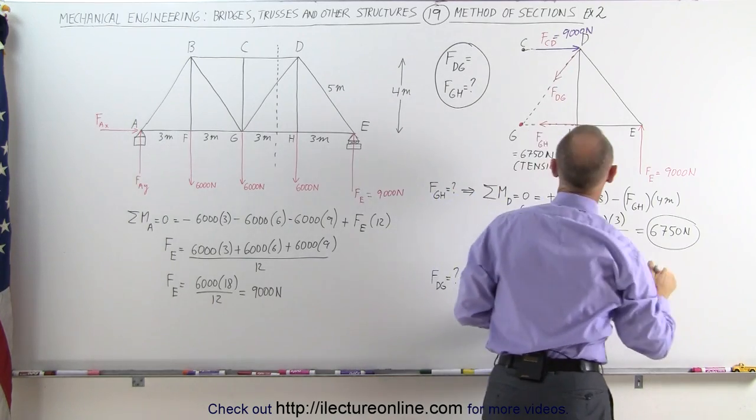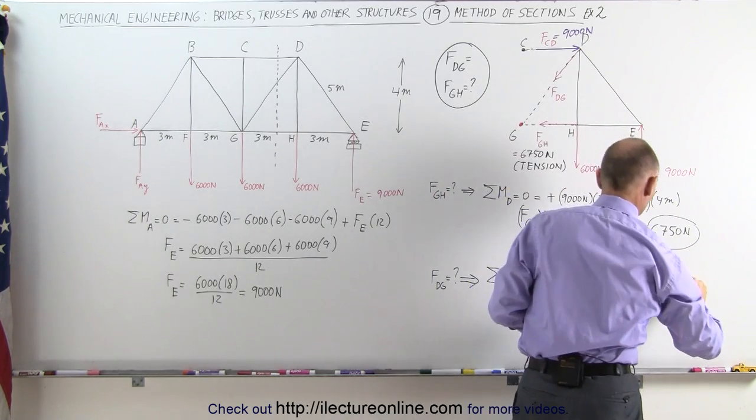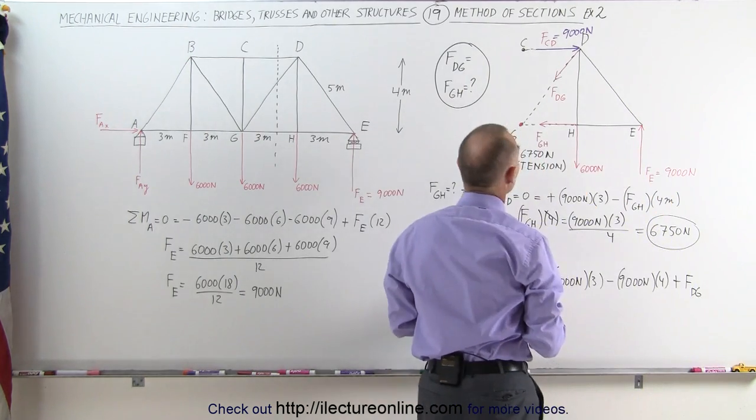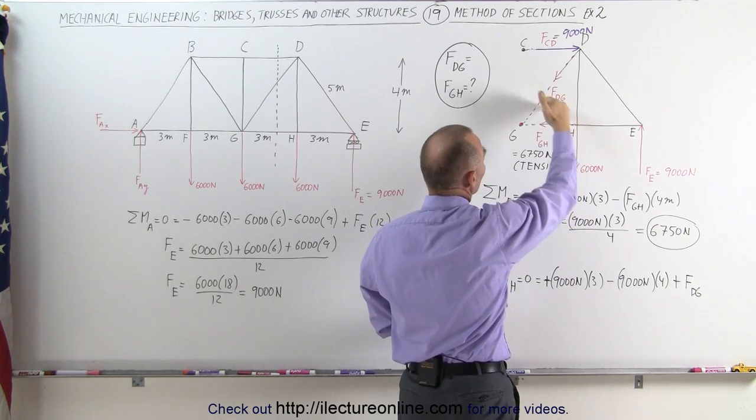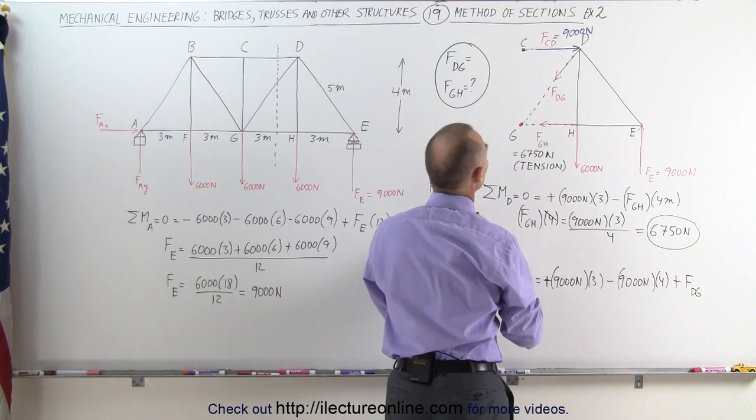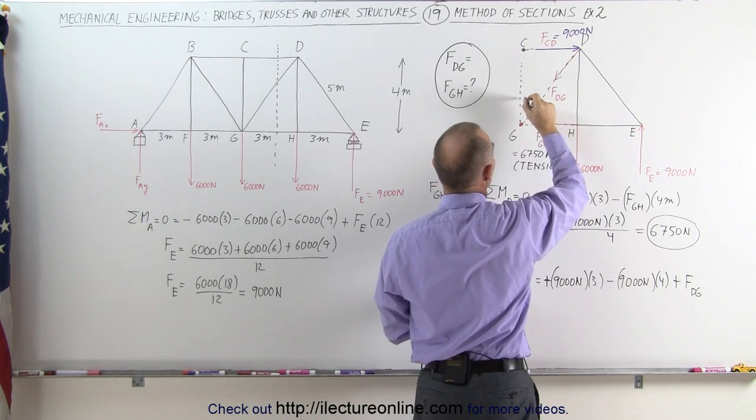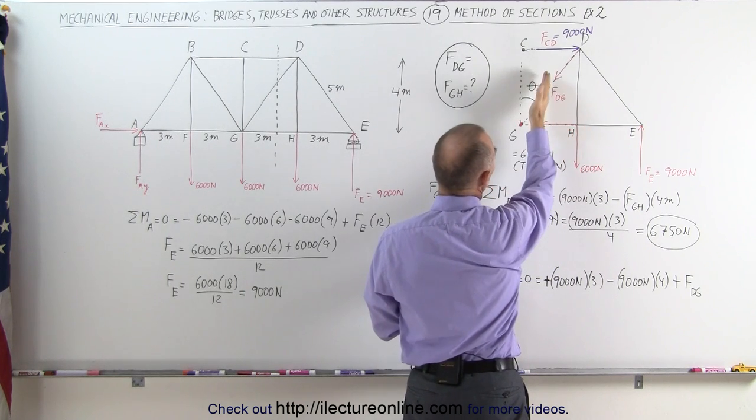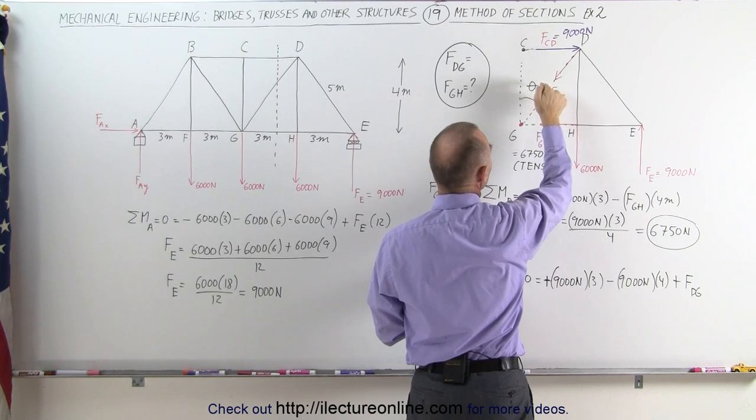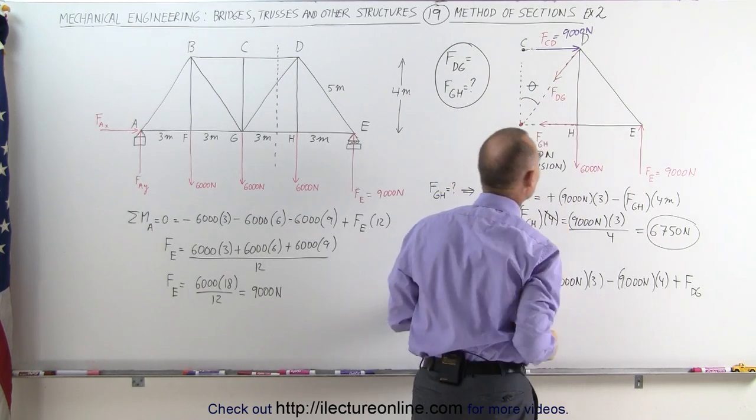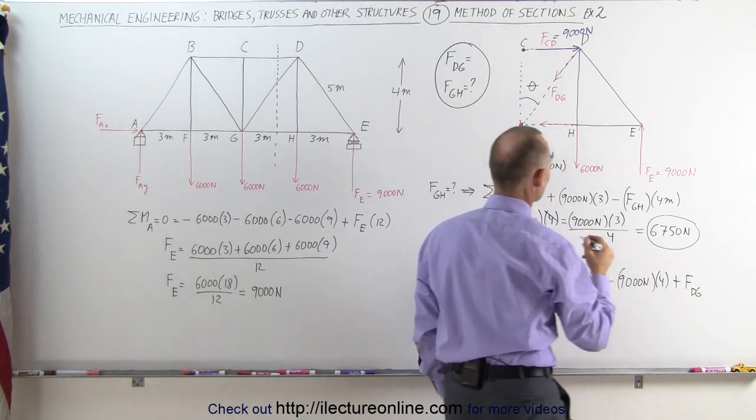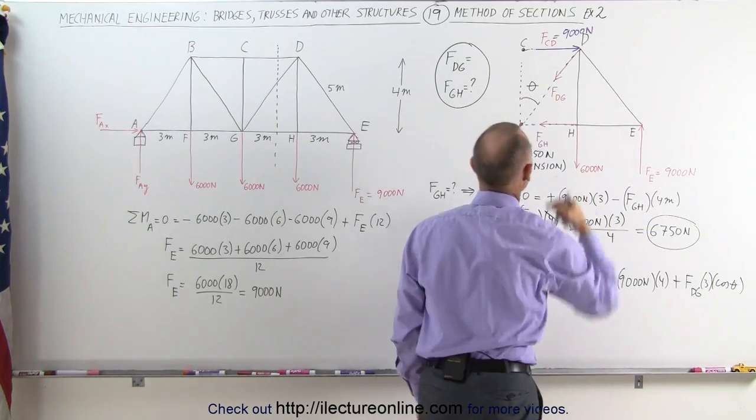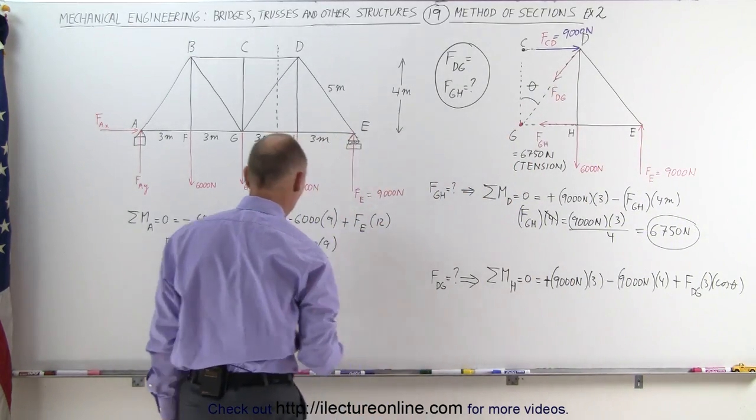Now we have one more right here, which would give us a counterclockwise direction force or moment I should say. That's plus FDG now. What is the distance? The distance right here, but that's hard to calculate. So what we're going to do is we're going to come up with this angle here. We can take this distance multiplied times the cosine of this angle to give us the effective distance between this force, the line of action of this force and the pivot point H, which means we're going to take the distance of 3 meters multiplied times the cosine of theta. I now have to find the angle theta. I can do that with the arctangent.